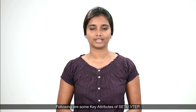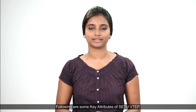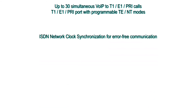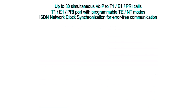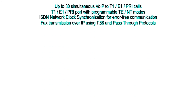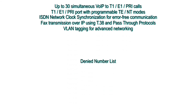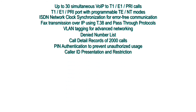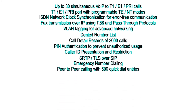Key attributes. Following are some key attributes of Setu VTAP: up to 30 simultaneous VOIP to T1E1 PRI calls; T1E1 PRI port with programmable TE or NT modes; ISDN network clock synchronization for error-free communication; fax transmission over IP using T.38 and pass-through protocols; VLAN tagging for advanced networking; denied number list; call detail records of 2,000 calls; PIN authentication to prevent unauthorized usage; caller ID presentation and restriction; SRTP and TLS over SIP; emergency number dialing; peer-to-peer calling with 500 quick dial entries.